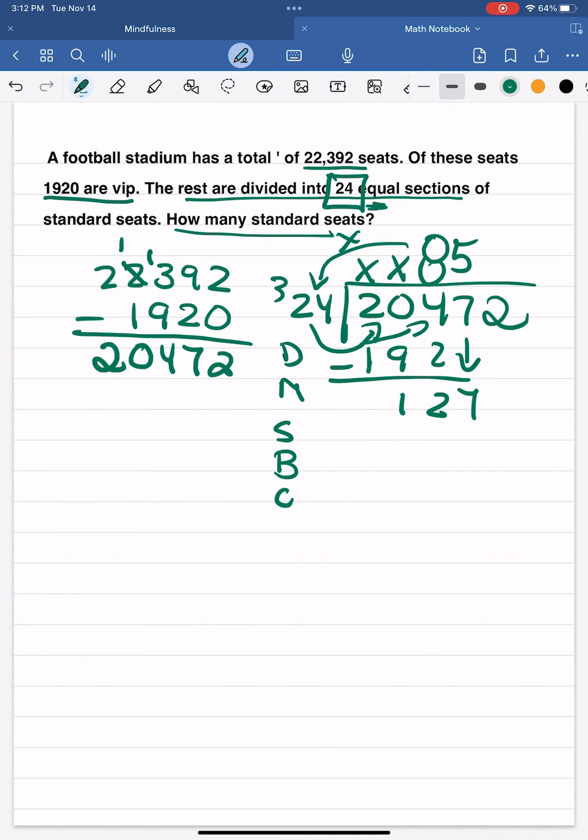Now I have to figure out how many groups of 24 can fit into 127. Dividing again, multiply by 5. 5 times 4 is 20. Carry the 2. And 5 times 2 is 10 plus 2 is 12. I'm left with the difference of 7.